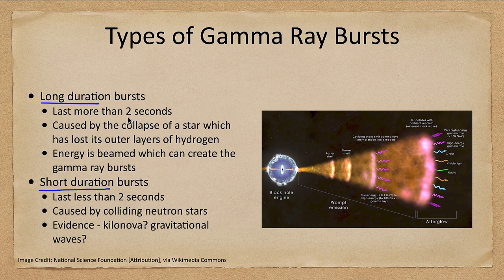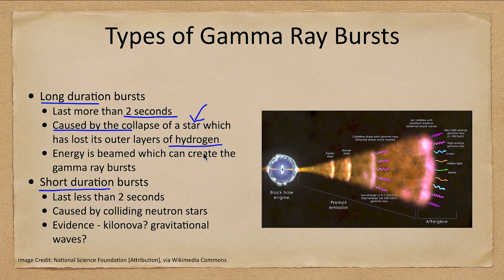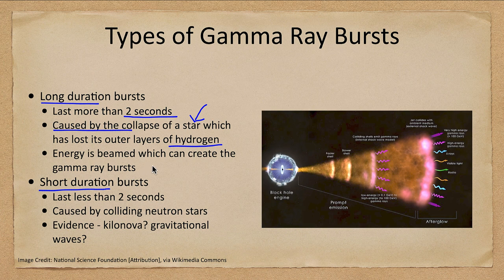The cutoff between the two types is set at two seconds. A long duration burst lasts longer than two seconds. We believe this is caused by the stellar collapse of a star that lost its outer layers of hydrogen. When it collapses down, material then expels outward, and through this the gamma rays come out because there is less material to shield them. Instead of this happening deep in the core, you have an exposed core where material is accelerating outward and can be emitted as gamma rays — and we detect these as long duration bursts, which may be only a few seconds but at least two seconds in length.